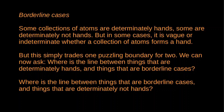Unfortunately, this answer doesn't do much to help. The trouble is that we seem to have simply traded one problematic boundary for two problematic boundaries. We now have collections of atoms that are determinately hands, collections that are determinately not hands, and collections that are borderline cases. And we can now raise exactly the same problem as before: where is the line between things that are determinately hands and those that are borderline cases? And where is the line between borderline cases and things that are determinately not hands? This only seems to have made our problem worse. It seems that by application of a very plausible principle, we end up with the conclusion that either everything is part of my hand or nothing is a hand.